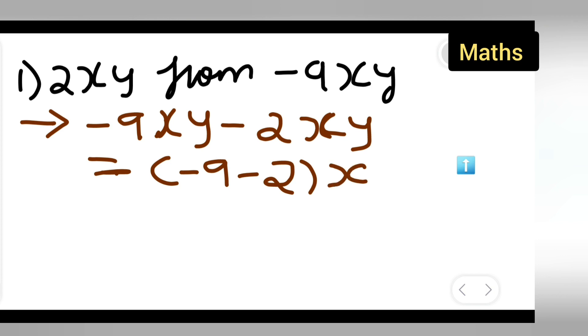You can add these numbers because minus and minus is plus, which means you need to add it. So you will get -11xy. So your answer is -11xy. I hope you have understood how to subtract 2xy from -9xy.